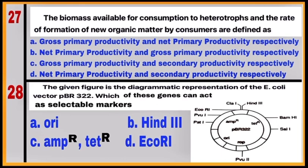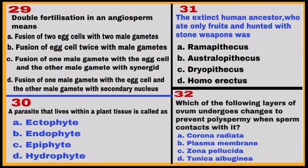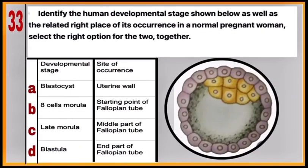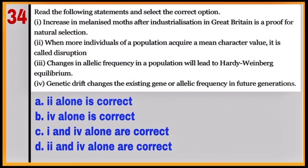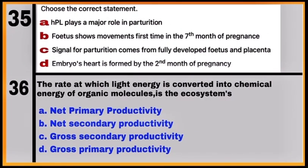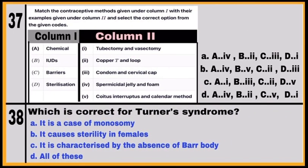Identify the selectable markers of pBR322 from the given figure. Solve questions 29, 30, 31, and 32. Question 33 is again based on Human Reproduction. Question 34 is from the chapter on Evolution. Next, questions 35, 36, 37, and 38 follow.